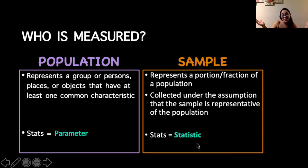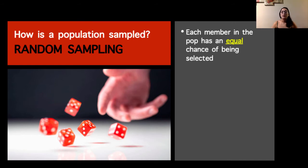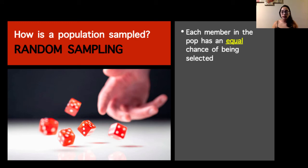When we have a sample, it's important that it has certain characteristics. We usually achieve this by collecting people at random. Random means each member within a given population has a relatively equal chance of being selected. If our population is individuals with Parkinson's disease in Southern California, we might put up flyers at different medical clinics. If someone with Parkinson's comes in, they see the flyer, or their healthcare provider thinks they might benefit and reaches out to the principal investigator to see if they're eligible.